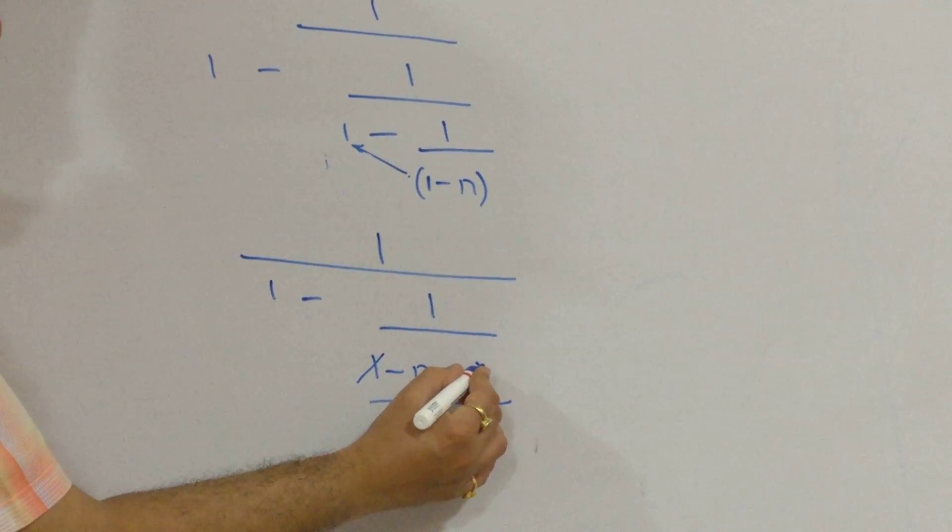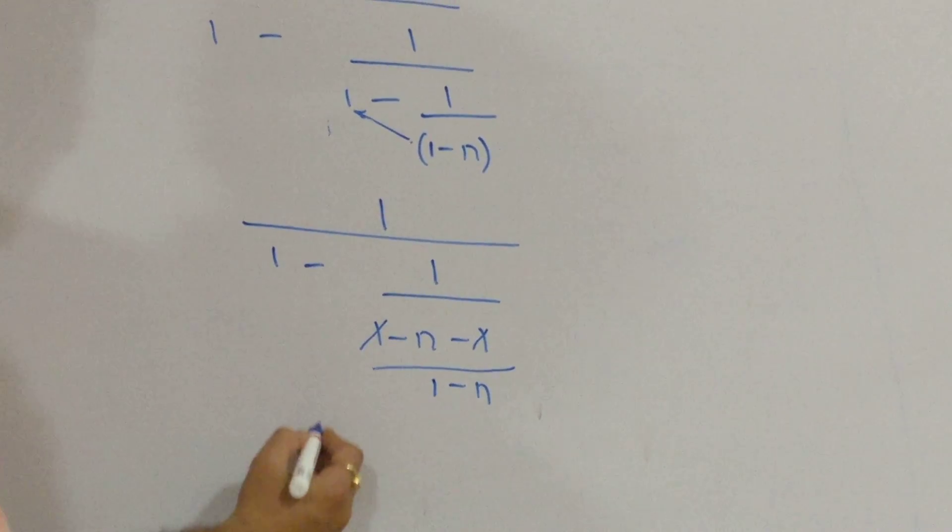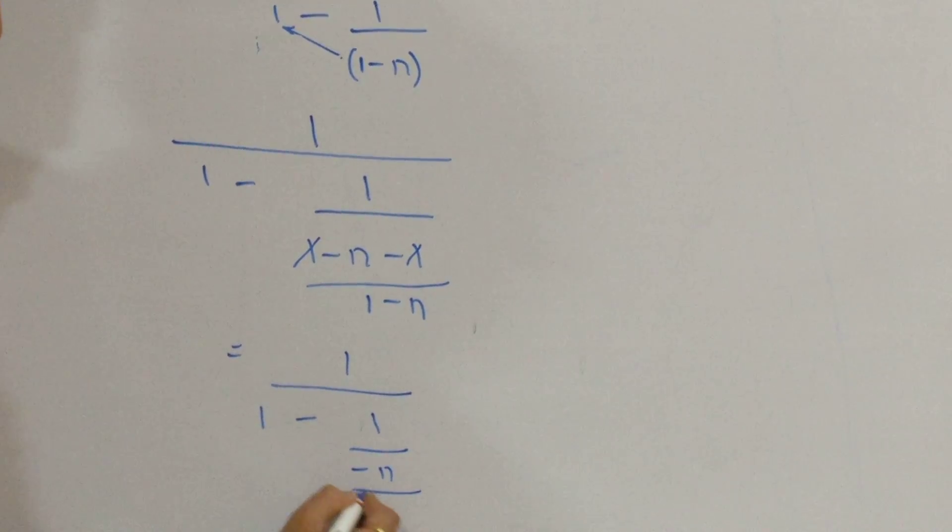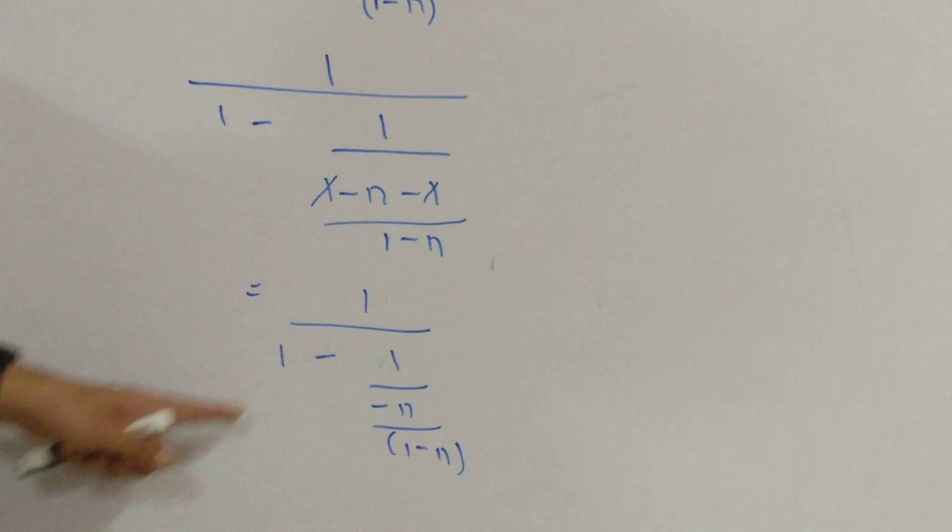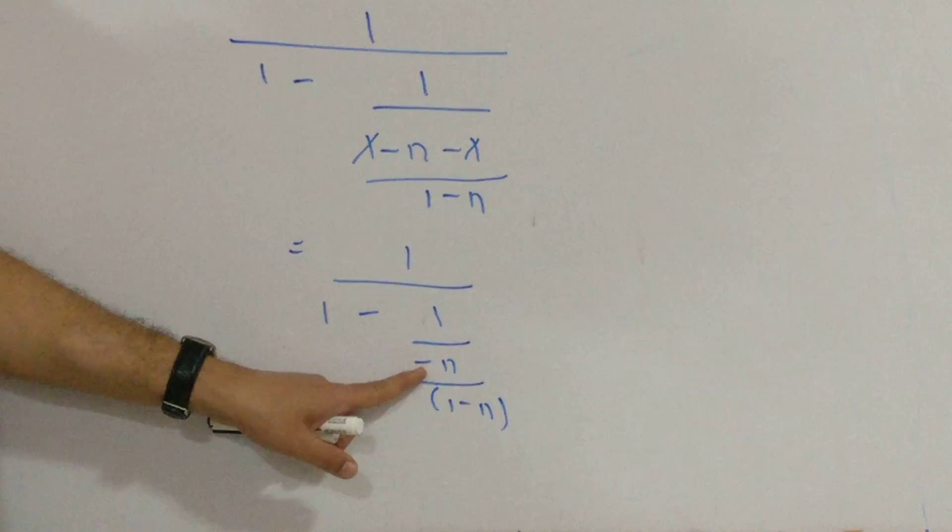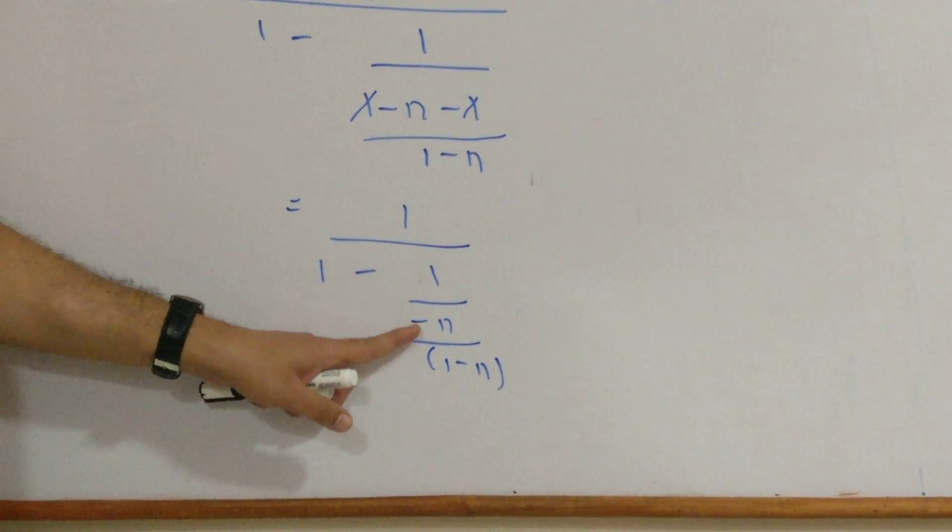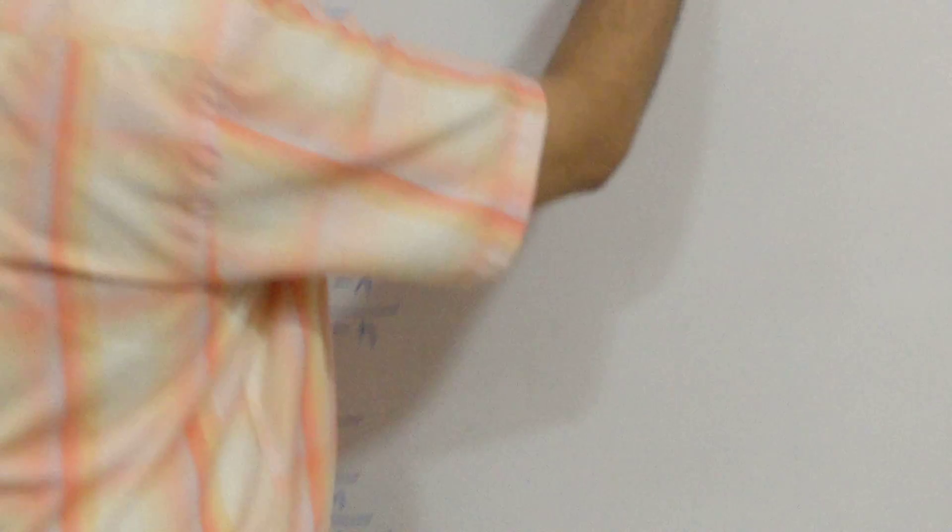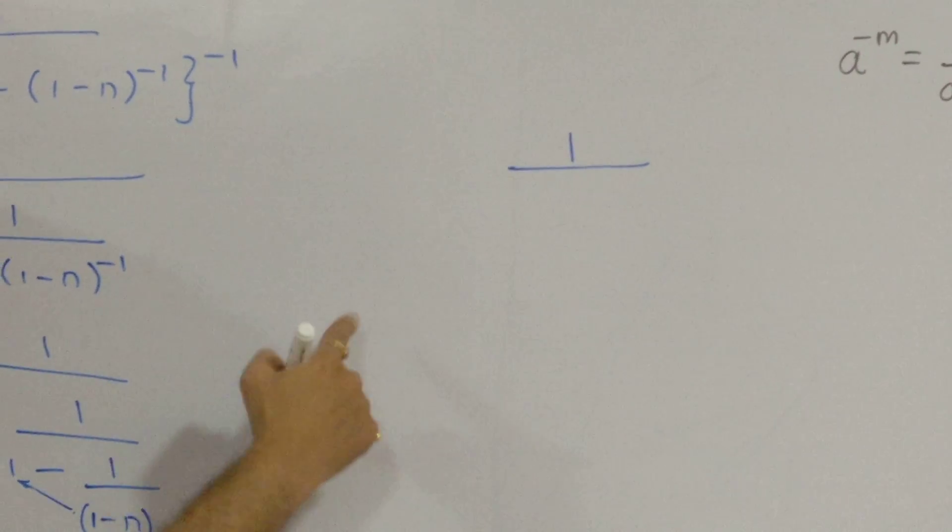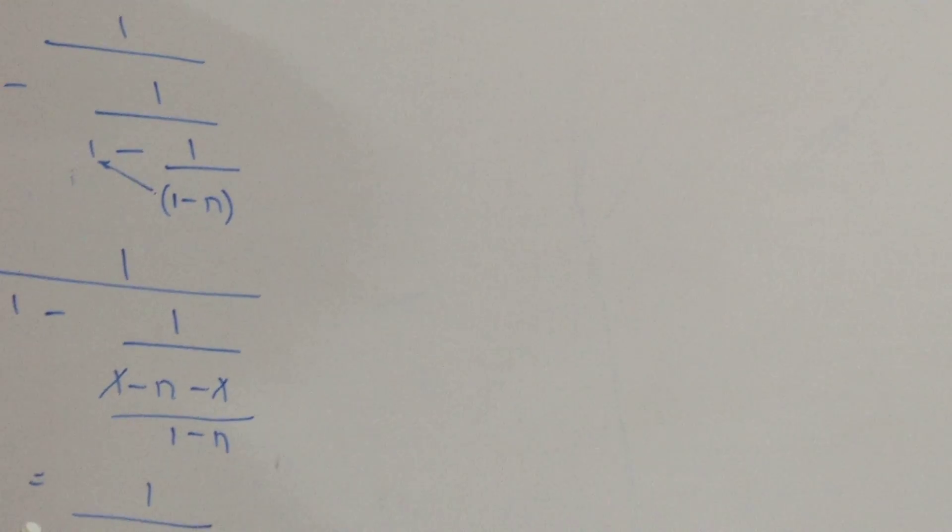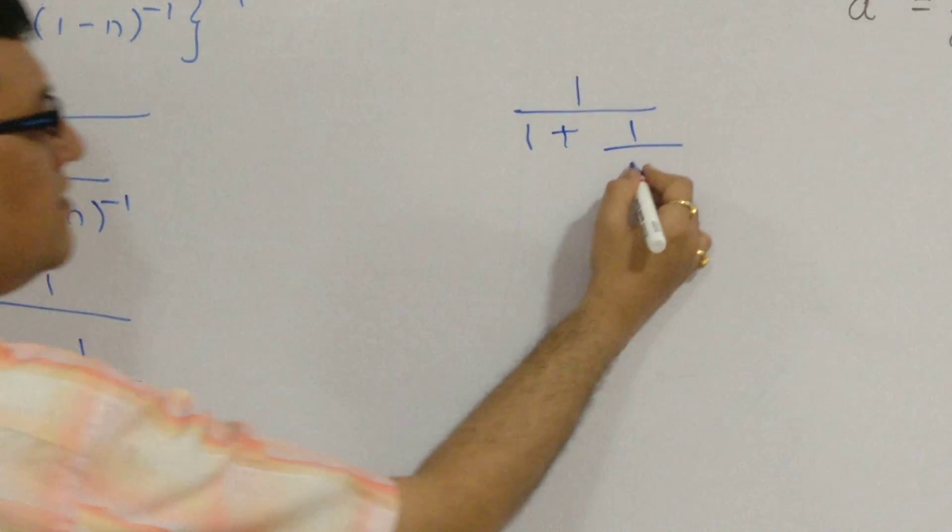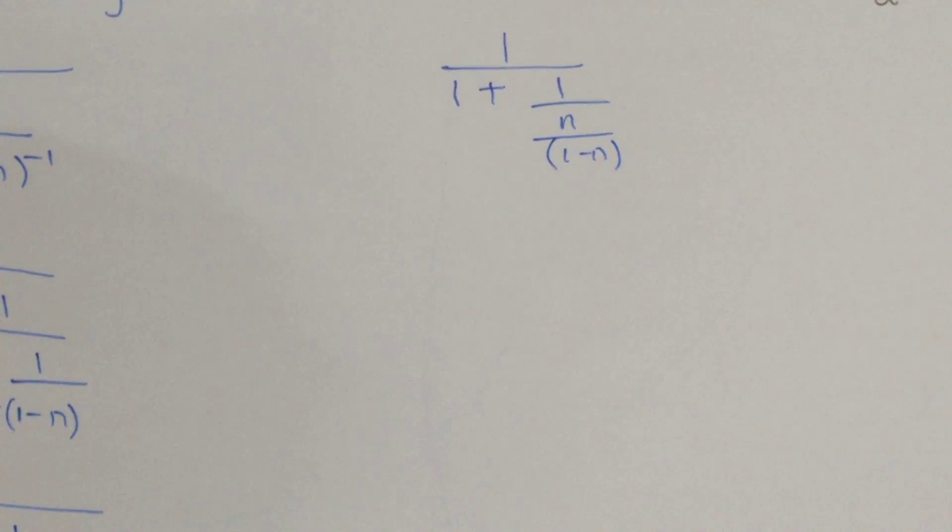Now, this one and this one shall get cancelled off. I am left with what? I am left with 1 upon 1 minus 1 upon minus n of 1 minus n in the denominator. Now, do I need to go for an LCM over here? But, prior to that, what am I going to do is, I am going to say that this minus sign and this minus sign which is there shall become plus. This minus out here and this minus out shall become plus. So, what will be the next step? Our next step shall be, our next step shall be 1 upon. So, this 1 upon 1. Now, instead of this minus, I will be taking minus of minus plus. So, this plus 1 upon n upon 1 minus n. n upon 1 minus n.